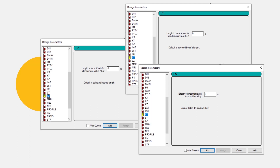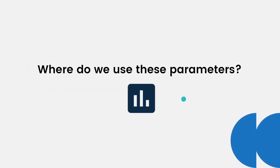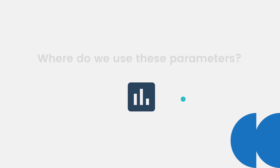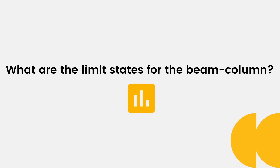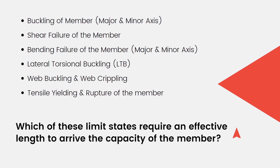It does not make much sense right away. To get better clarity, we need to answer one more question: where do we use these parameters? But before moving to that, we need to answer another question: what are the limit states for the beam-column?